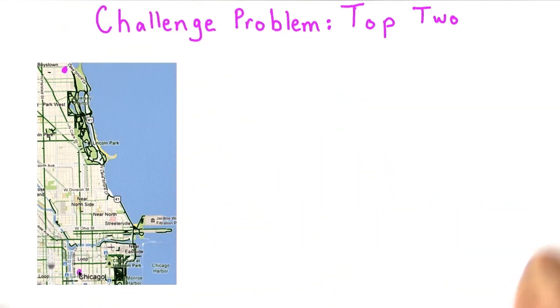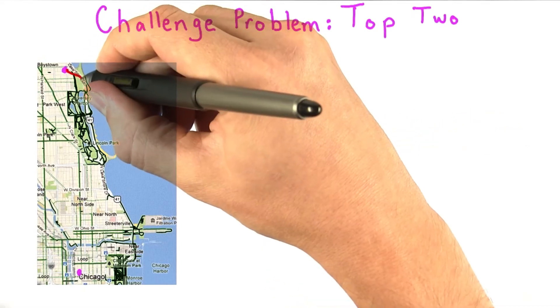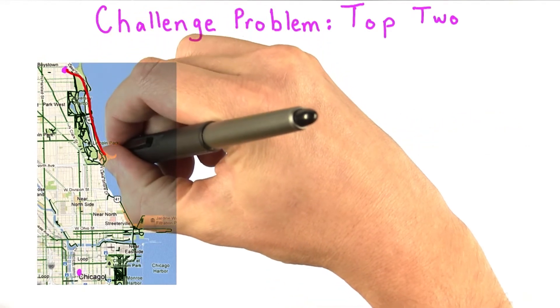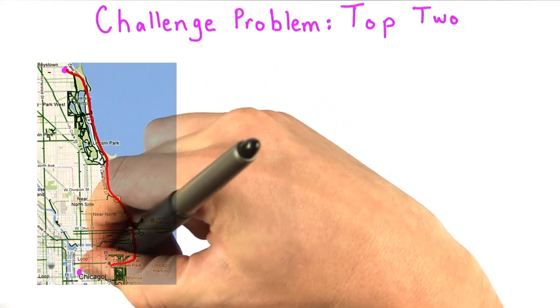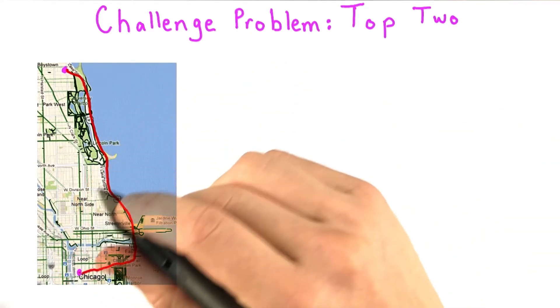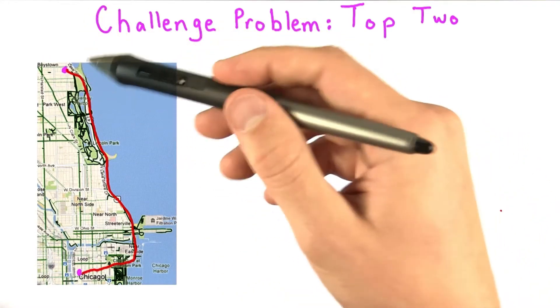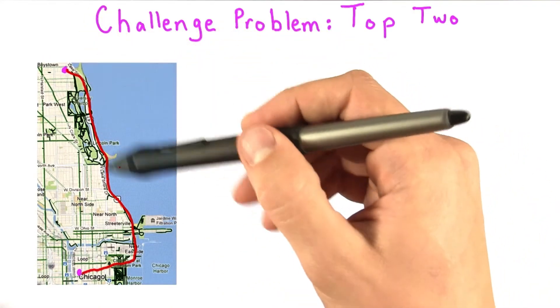So I did what anybody would do, and I looked for directions online, and the suggested route took me along the Lakeshore bike path and basically cut across to work. This seems like a great route. It's along the bike path along the lake, which is a very pretty ride.